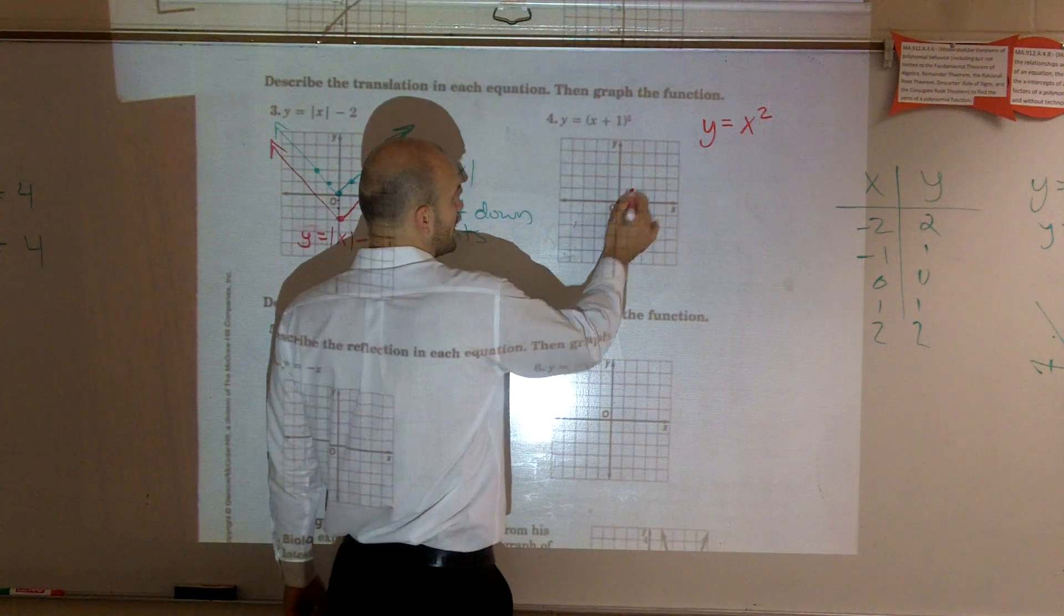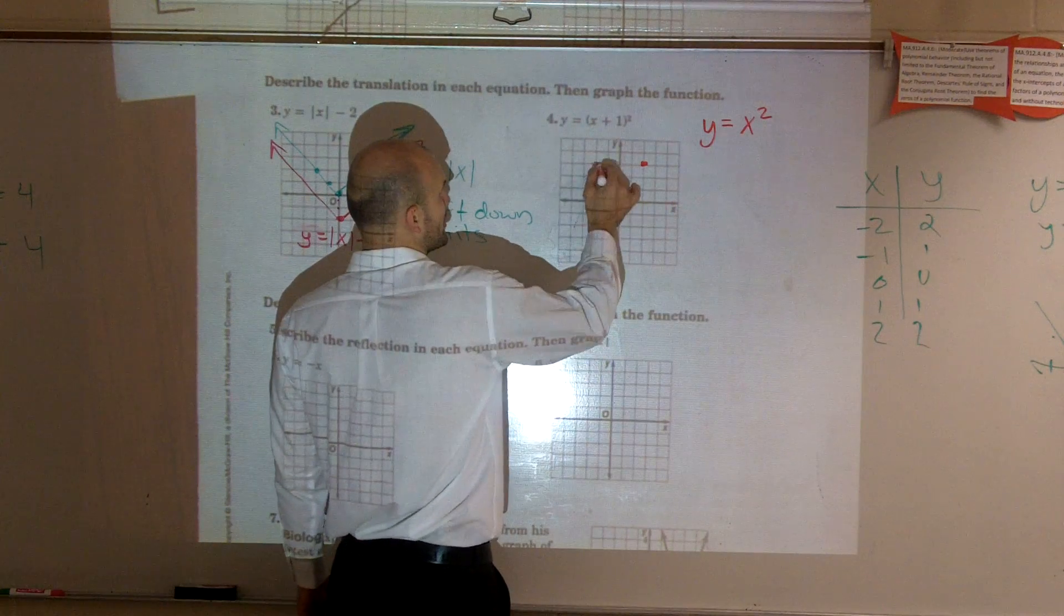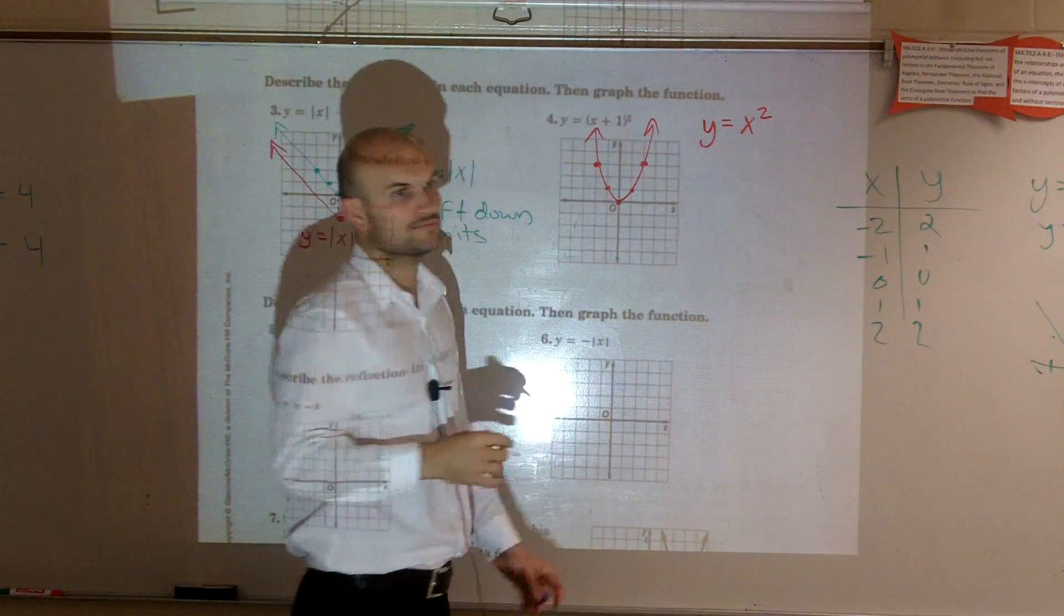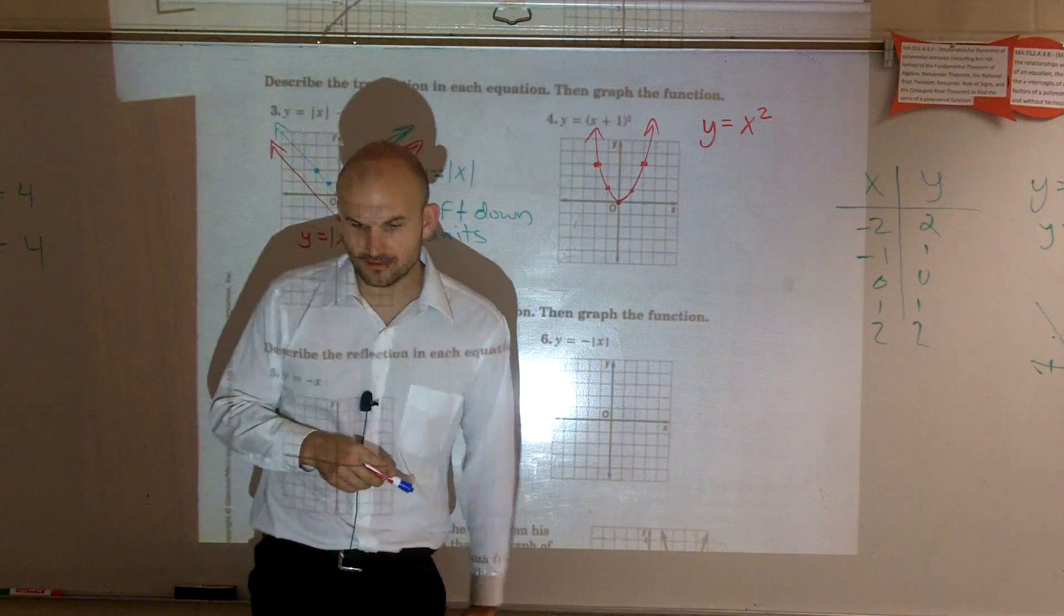And you could say 1, 1 squared is 1, 2 squared is 4. Negative 1 squared is 1, negative 2 squared is negative 4. So that is your parent graph, right? So determine what the parent graph is, and then graph it.